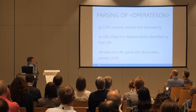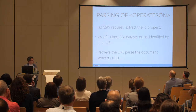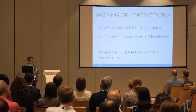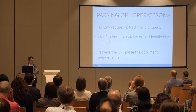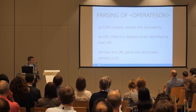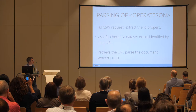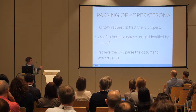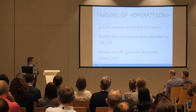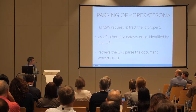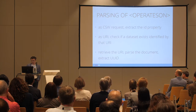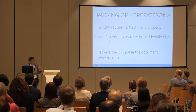Parsing the 'operatesOn' element: this is either a CSW request — which I doubt qualifies as a URI since CSW requests can have many element orderings — or a URI which may or may not also be present in the dataset. If both methods don't work, we have to go to the third option, which is to retrieve the actual document on the other side and parse it to retrieve the URI. The goal of this is to be able to link from dataset to service and back in the catalogue application.